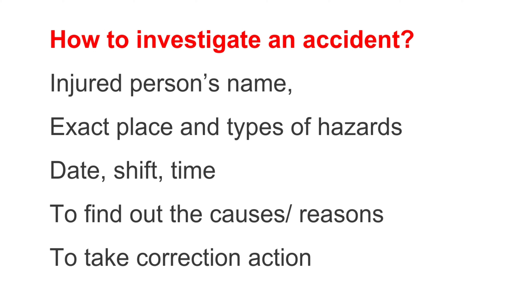Question: How to investigate an accident? Answer: 1. Injured person's name. 2. Exact place and types of hazards. 3. Date, shift, time. 4. To find out the causes and reasons. 5. To take corrective action.